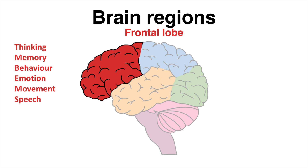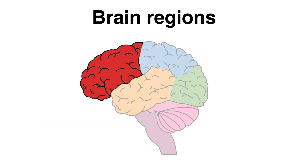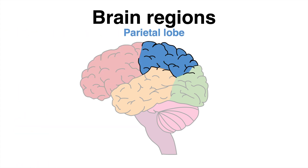The region behind the frontal lobe is termed the parietal lobe. The parietal lobe is primarily important for sensation such as touch and smell, but also for language.